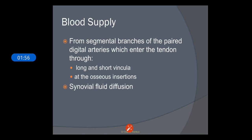Blood supply is from the segmental branches of the paired digital arteries, which enter the tendon through the long and short vincula and at the osseous insertions. Synovial fluid diffusion also occurs along with these blood supply levels. The blood supply of tendons is important to know because there are certain avascular zones — in FDS over the proximal phalanges and in FDP over the middle phalanges. Nutrition is vital for rapid healing, minimization of adhesions, and restoration of gliding.